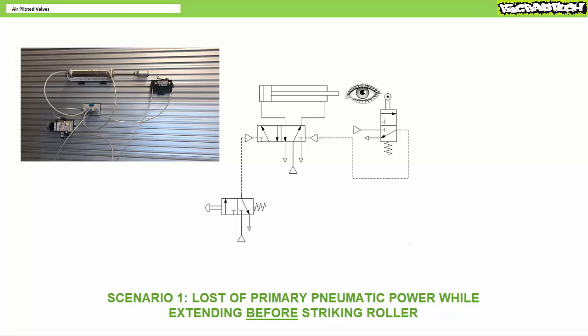Given air pressure was lost while extending, the spool of the air piloted valve remains in the position allowing extension. Upon restoration of air, the cylinder continues extending — pressing the back of the operator's head against the roller valve, thus retracting the cylinder.